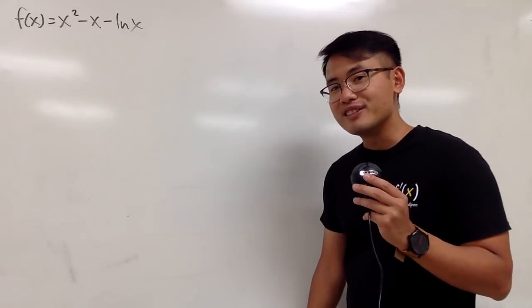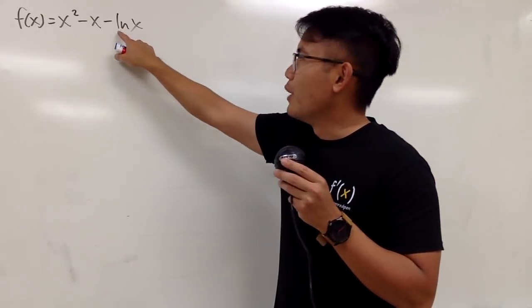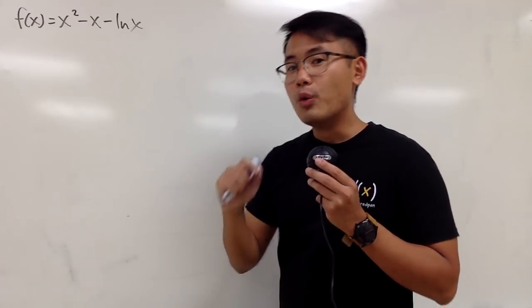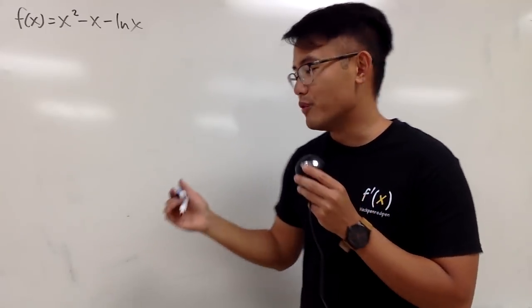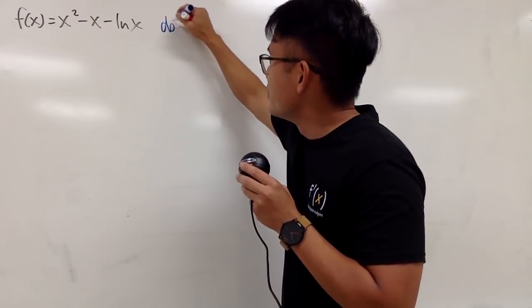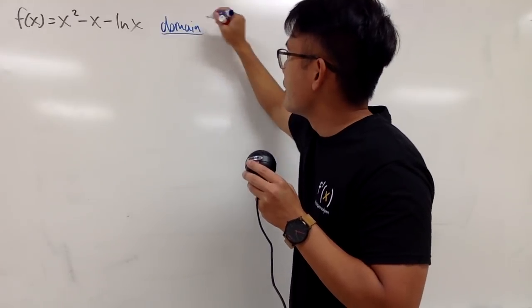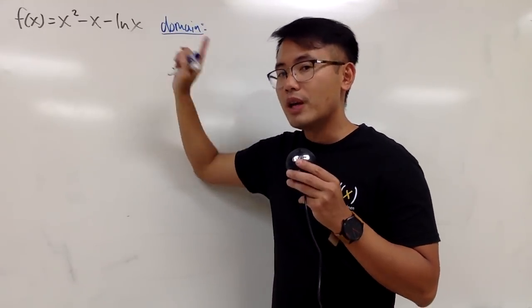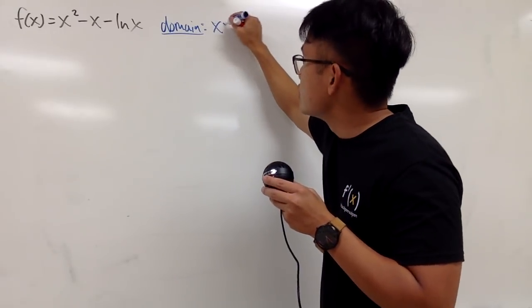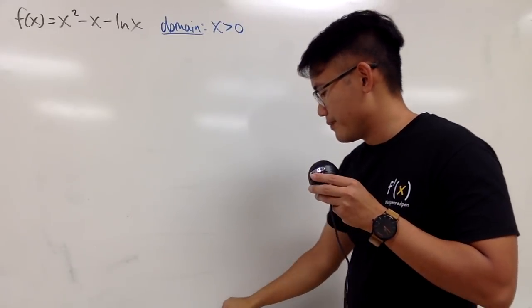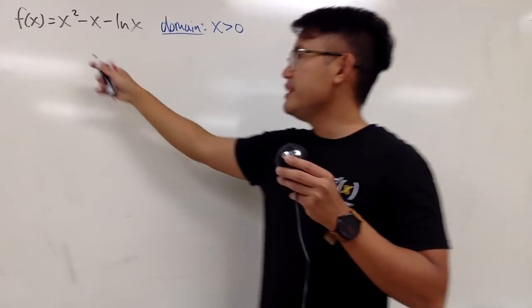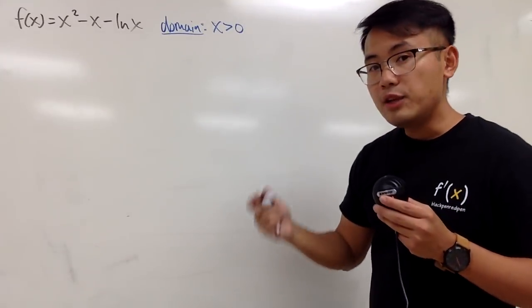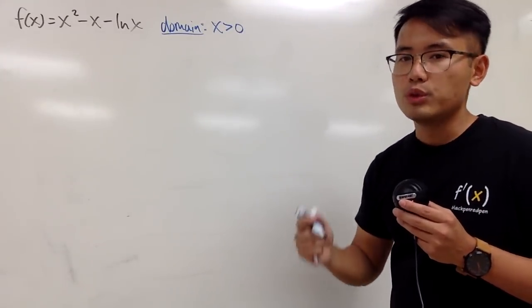Before we start anything, we see that we have ln x right here. That's not great — we better state the domain before we move on. Here we have x as an input, so x has to be greater than 0. We cannot plug in any negative numbers. Let's deal with the increasing and decreasing first.